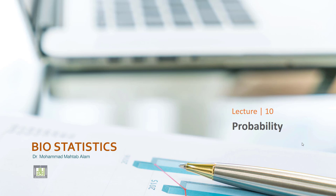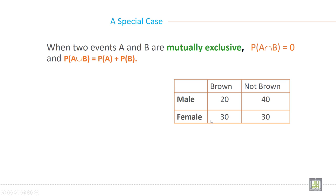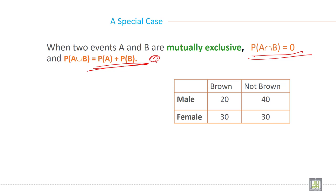Bismillah ar-Rahman ar-Rahim. I am Dr. Muhammad Mehta Balam and I am discussing about probability distribution — a special case of addition in probability. When two events A and B are mutually exclusive, probability of A intersection B is equal to 0, and probability of A union B will become probability of A plus probability of B, because A intersection B is already 0.